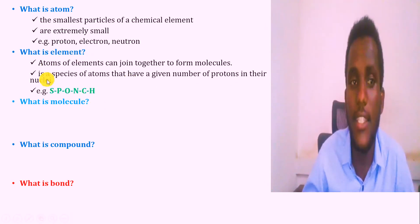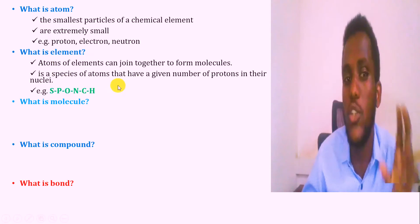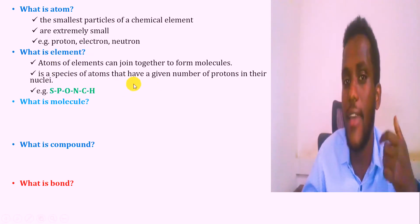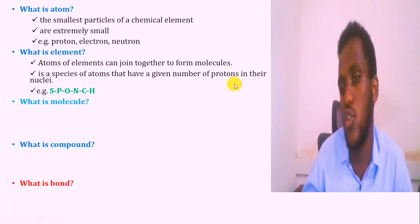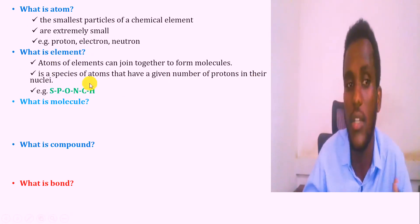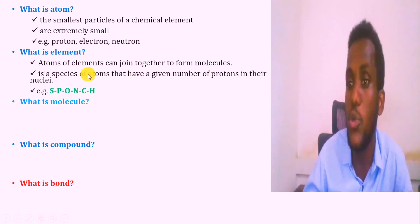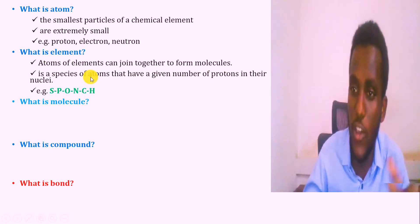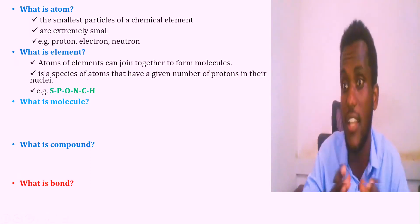An element is a species of atoms that have a given number of protons in their nuclei. Elements that are common in living organisms include the SPONCH elements.